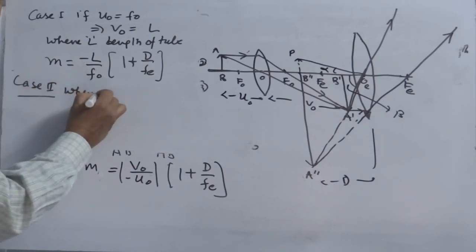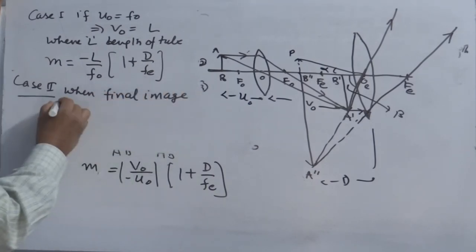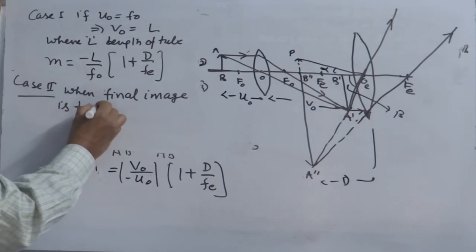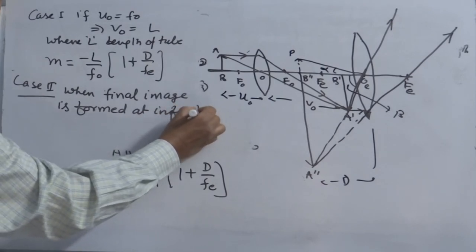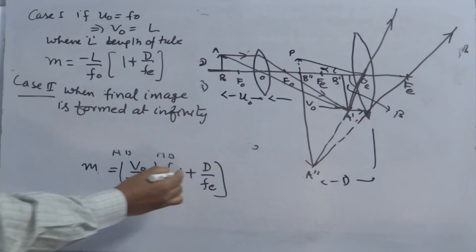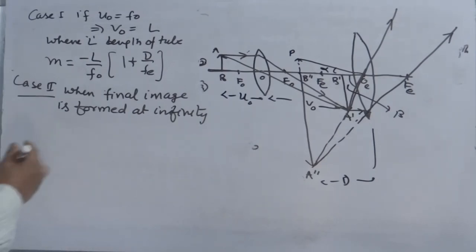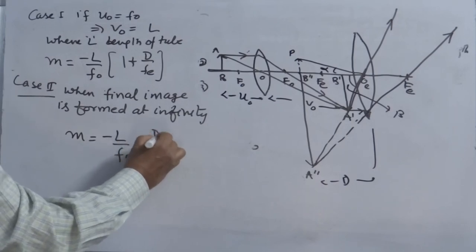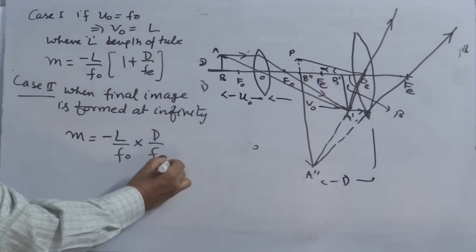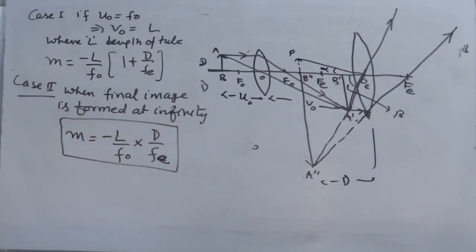Case 2: when the final image is formed at infinity, you can ignore the '1' factor, and the formula becomes M equals minus (L / f_o) times (D / f_e). This formula is very important because most examination questions are based on it.